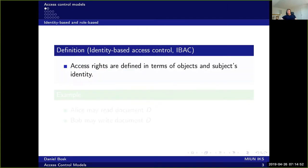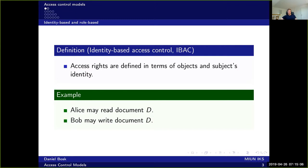Let's start with identity-based access control. Identity-based access control means that the access rights are defined in terms of objects and the subject's identity. For instance, Alice may read document D, and Bob may write document D. It's the subject's identity, the access operation, and the object in question that we specify. This means Alice may read the entire document D, and Bob may do whatever he likes, overwriting document D.